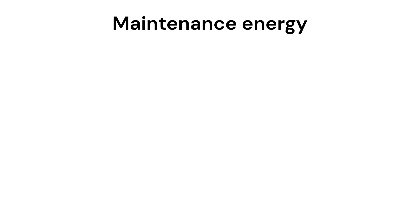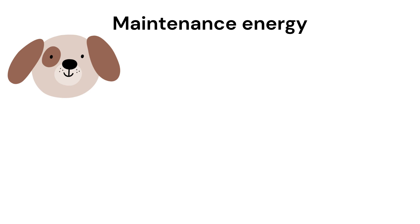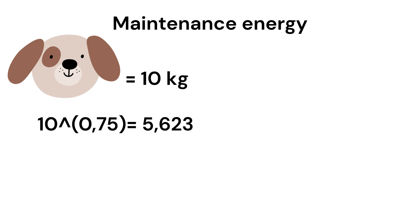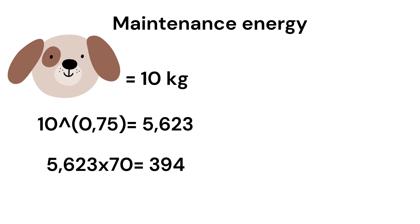I will give you an example on how to use this formula. We have a dog that's 10 kilograms, so we take the dog's weight, which is 10, and raise it to 0.75, and that gives us 5.623. Then we take 5.623 and multiply it with 70, and we get something like 393.61.